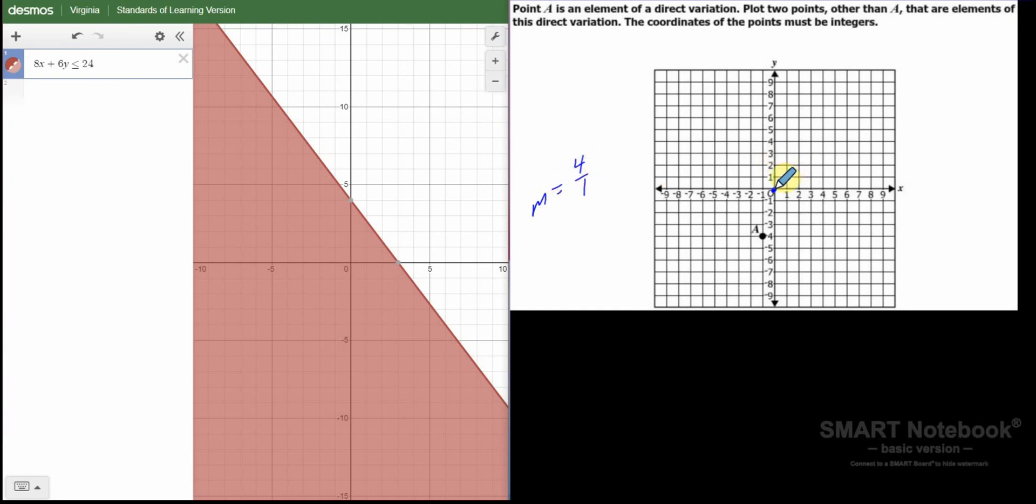So from here, I'm going to count up four over one. So there we go. I plotted one point. It says plot two points other than A that are elements of this direct variation. I'm going to find another one. I'm going to repeat up four over one. There we go. On the electronic test, you just click here and click here where I've bubbled them in. Or you could have clicked this one as well. You could have clicked this one and either one of those. I actually have three more points.